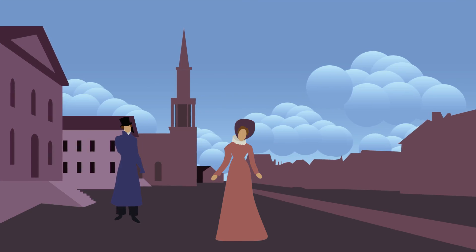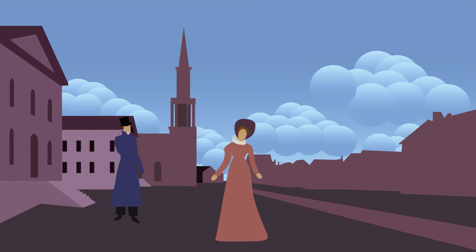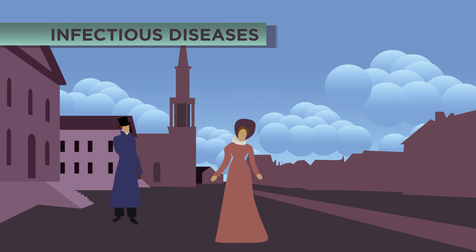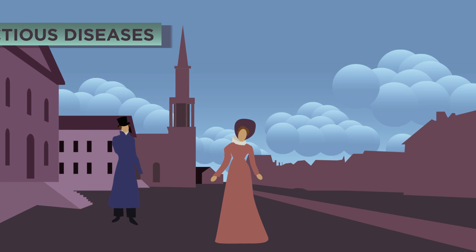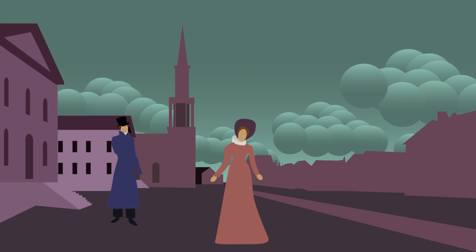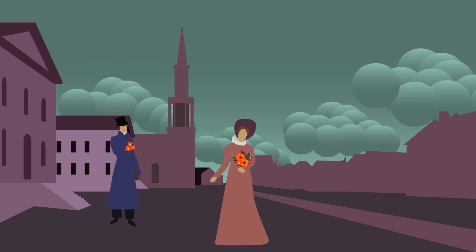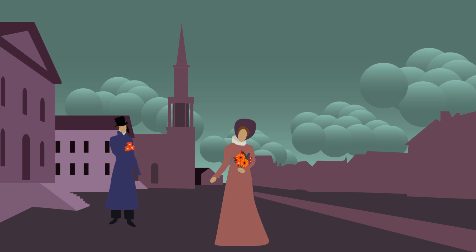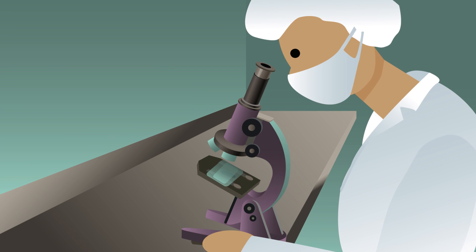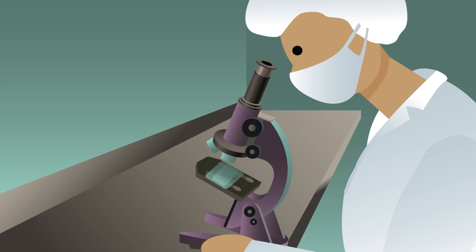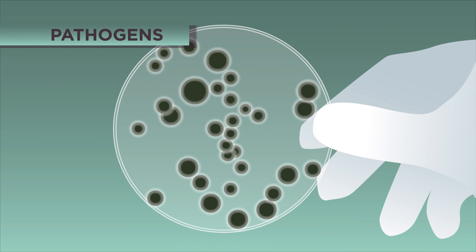Did you know that it wasn't until around 200 years ago that people knew what caused infectious diseases? Before that, they believed one cause was bad air, and so they carried around bunches of sweet-smelling flowers to sweeten the scent of the air and prevent disease. Thanks to the invention of the microscope and the experiments carried out by scientists, we now know that infectious diseases are caused by pathogens such as viruses and bacteria.